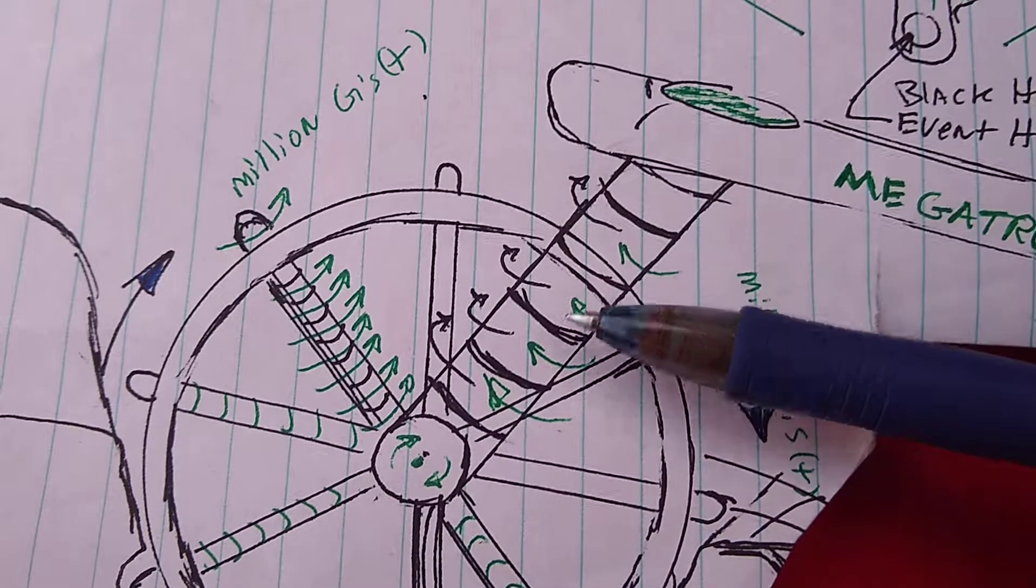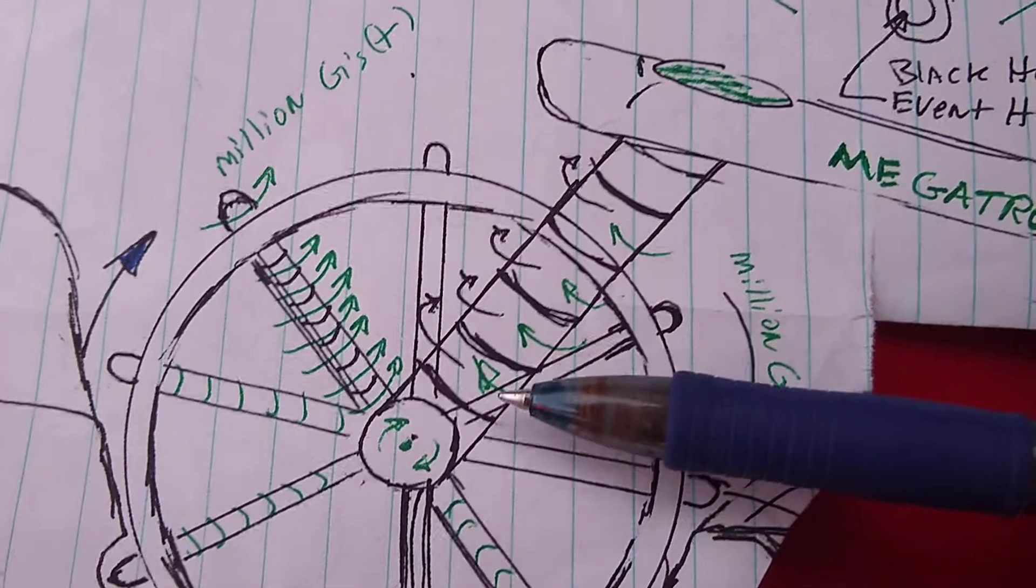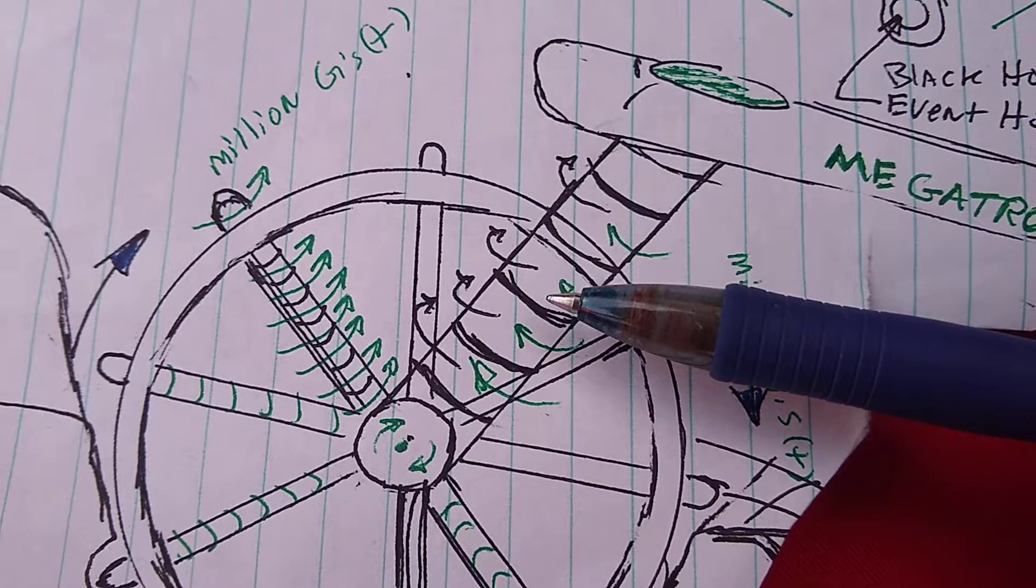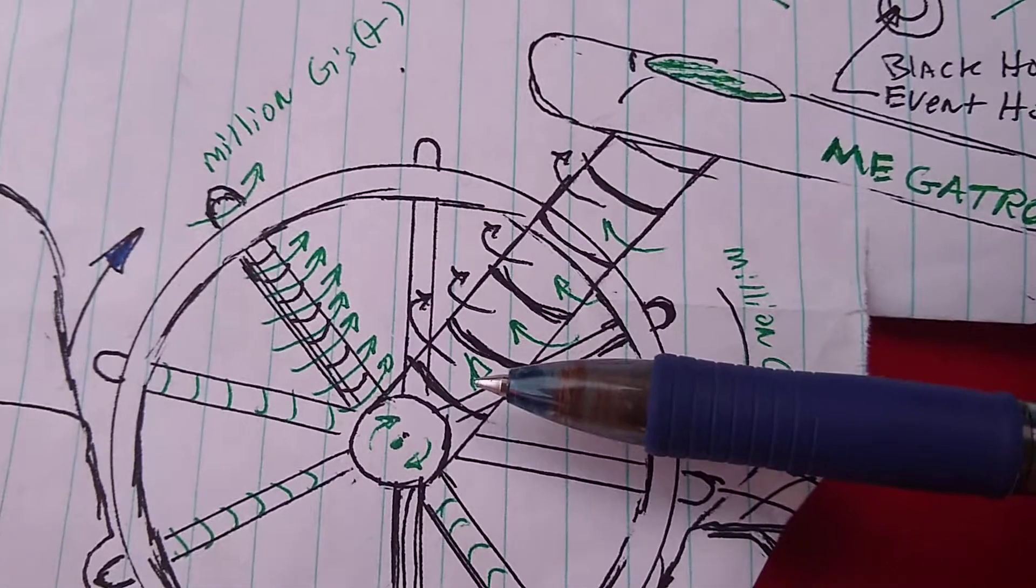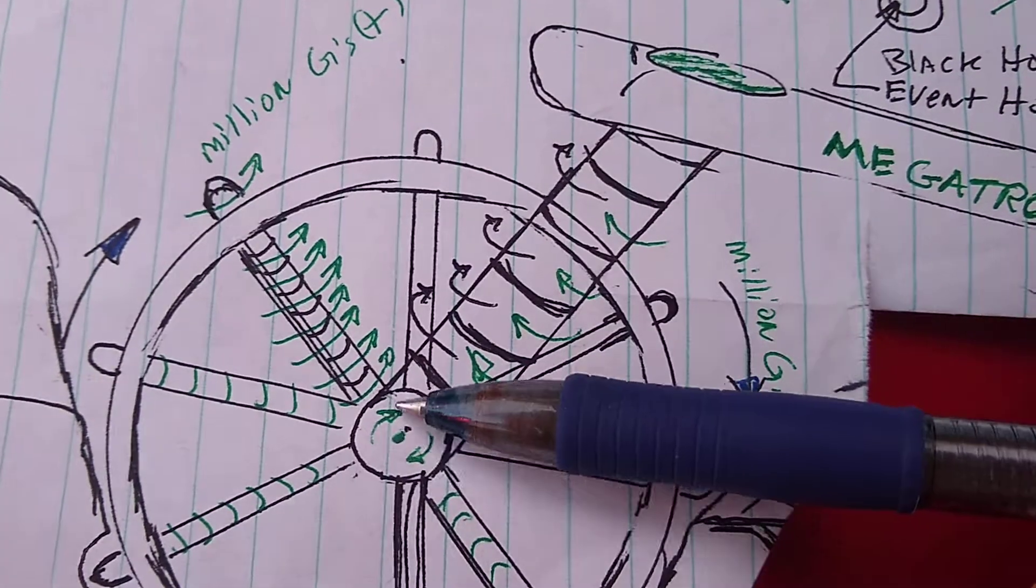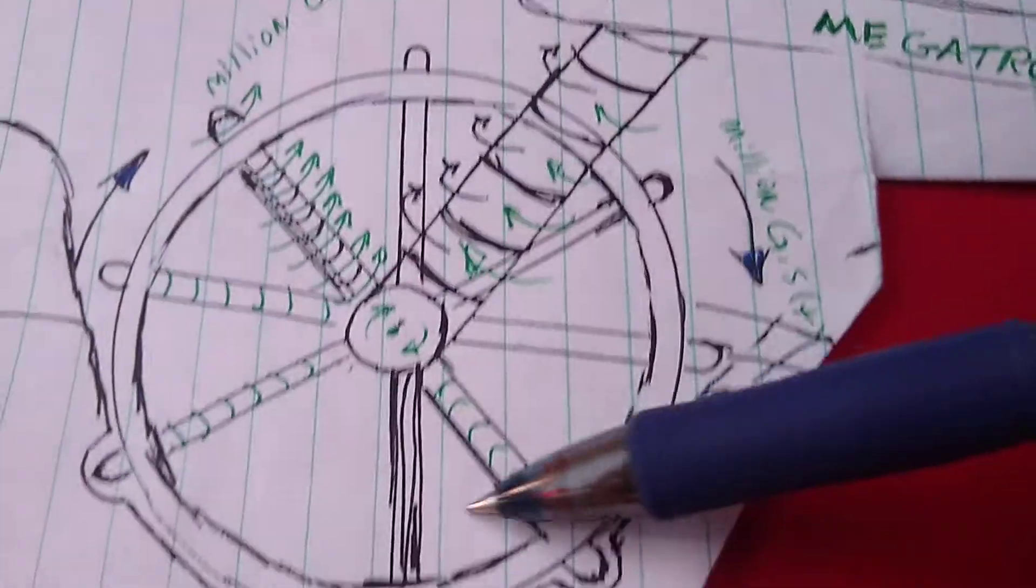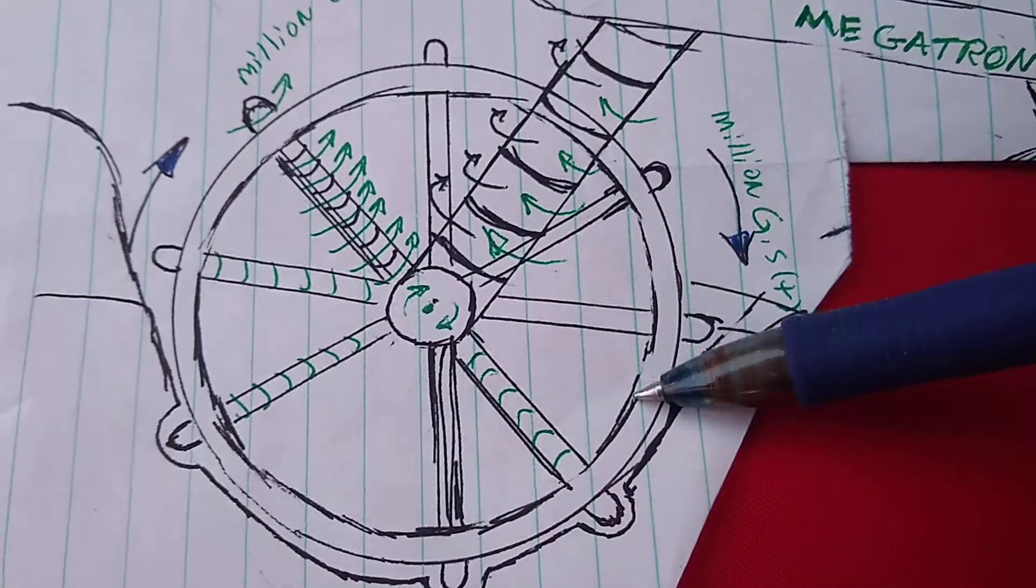So the top one, the same and all the way down. So all these are spinning at 200,000 G's for example purposes. Then let's say you have 10 engines and at the end result, the wheel will be spinning, this wheel right here, is spinning at 1 million G's.